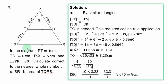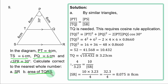Question 9. In the diagram, PT = 4 cm, TS = 6 cm, PQ = 6 cm, and angle SPR = 30 degrees. Calculate, correct to the nearest whole number: (a) SR, and (b) the area of quadrilateral TQRS. In this diagram you have two triangles: triangle PTQ and triangle PSR. By properties of similar triangles: PT/TQ = PS/SR. We know PT = 4, so we need TQ first.